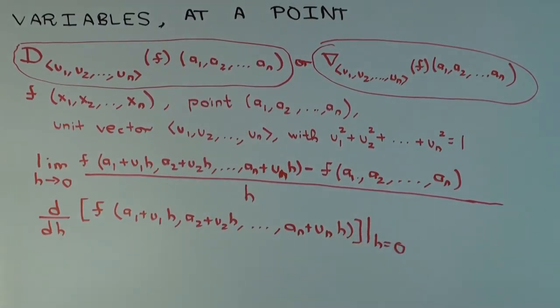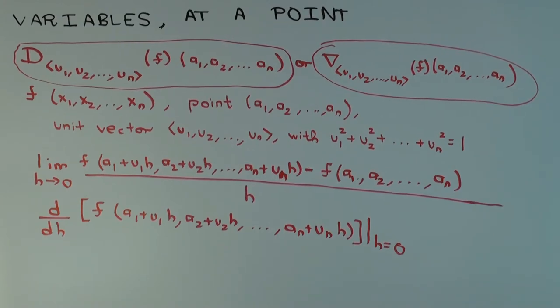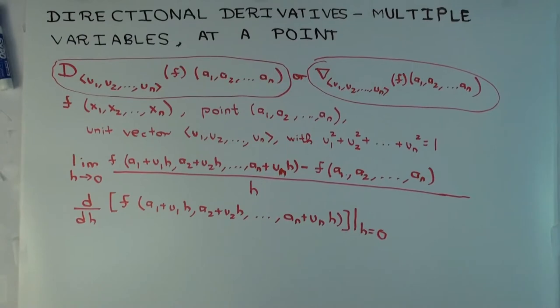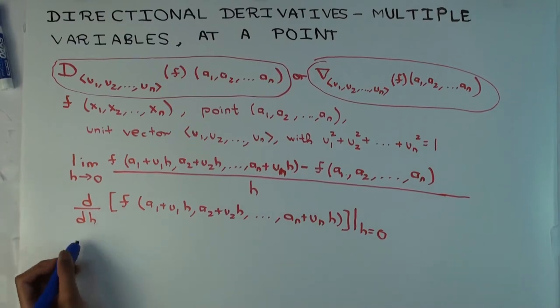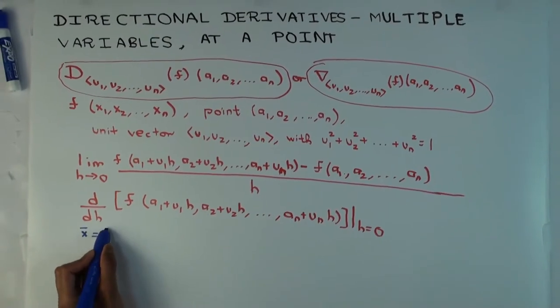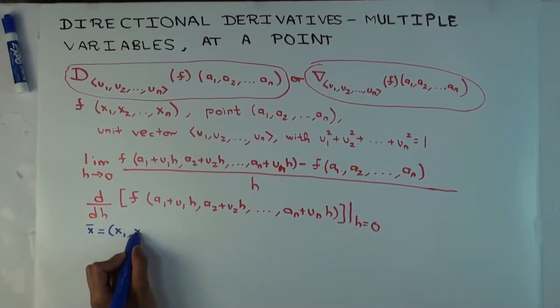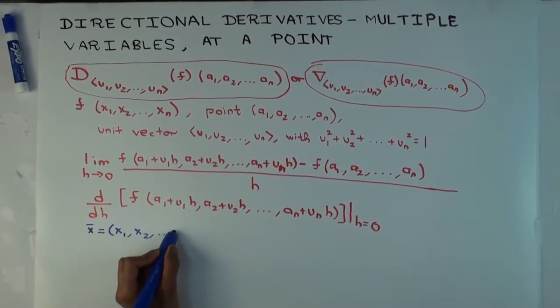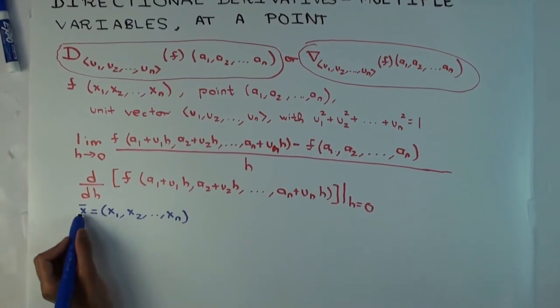So now I want to say this slightly differently. I want to say it in a vector notation. It will become much clearer, cleaner in that notation. So let's do the vector notation here. Let's denote by x̄ the vector, the points x₁, x₂ to xₙ. And so I'm now thinking of the input as a vector.